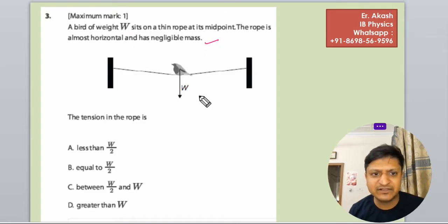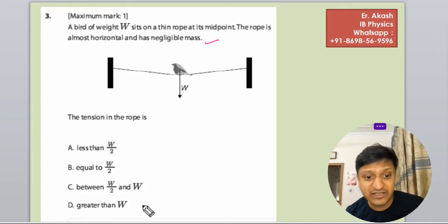It is a bird and the weight is W. The tension in the rope is less than W by 2, equal to W by 2, between W by 2 and W, or greater than W.